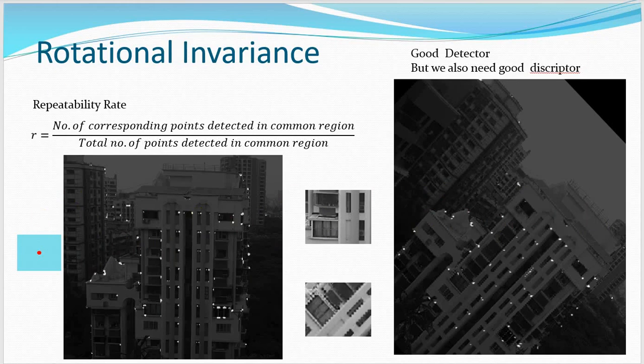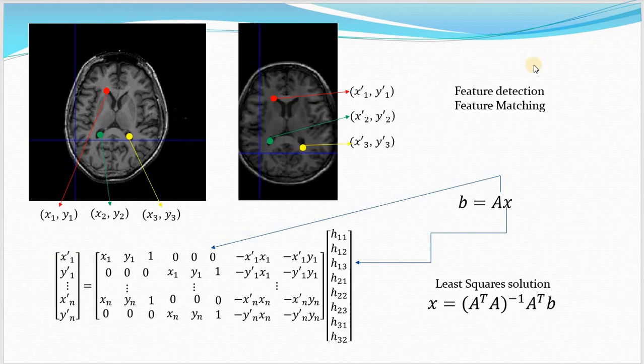In the next step, we have to do feature matching. So please remember: we are now doing feature detection, that is selecting these points, and next is going to be feature matching.